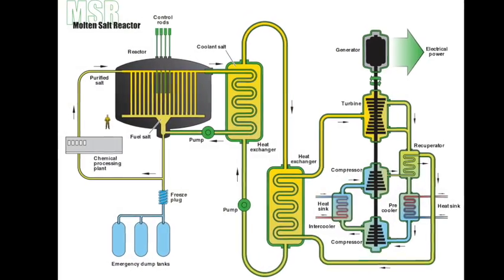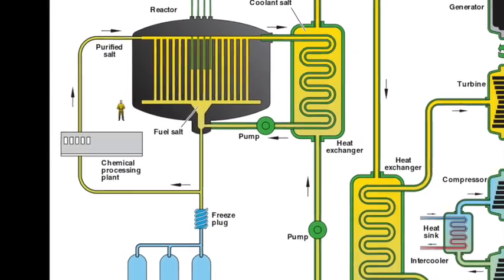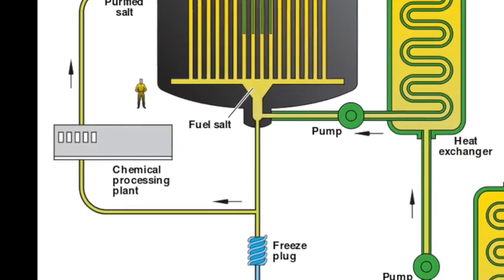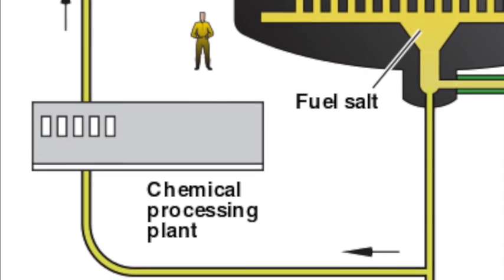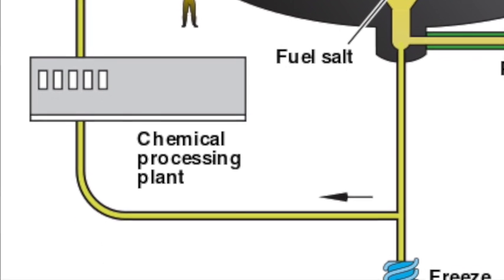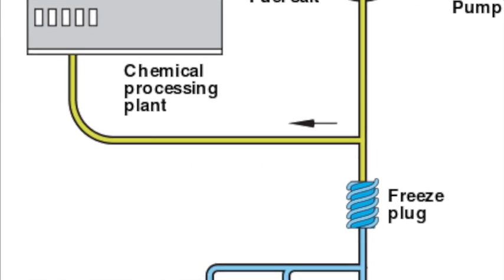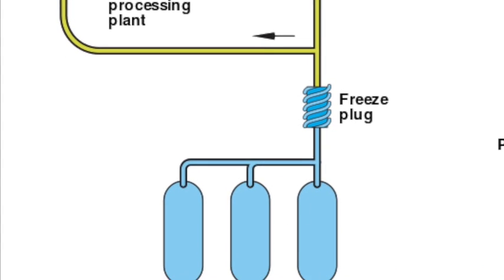The fuel then flows through a chemical processing plant, where fission products are removed and the fuel salt is added. This is sent back to the reactor core. During transport, the fuel passes through a region with a freeze plug and dump tanks. This is a preventive measure for overheating.